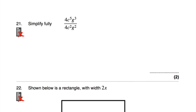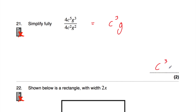Question number 21: simplify fully 4c⁵g³ over 4c²g². 4 divided by 4 is 1, so we don't write any coefficient. c⁵ divided by c² — subtract powers: 5 minus 2 is 3, so c³. g³ divided by g² — subtract powers: 3 minus 2 is 1, so just g. The answer is c³g.